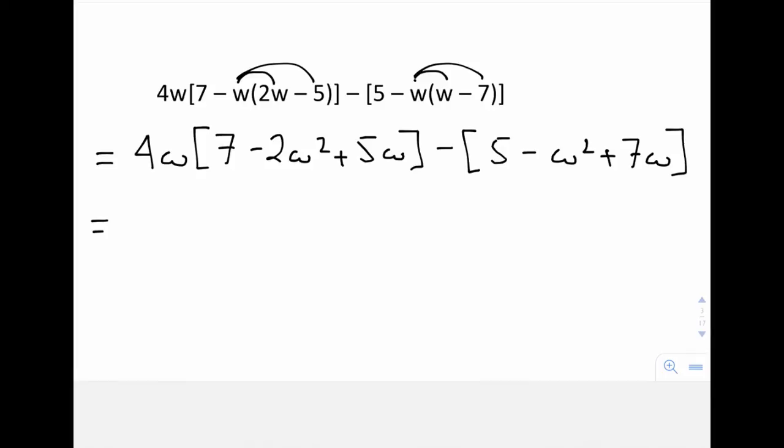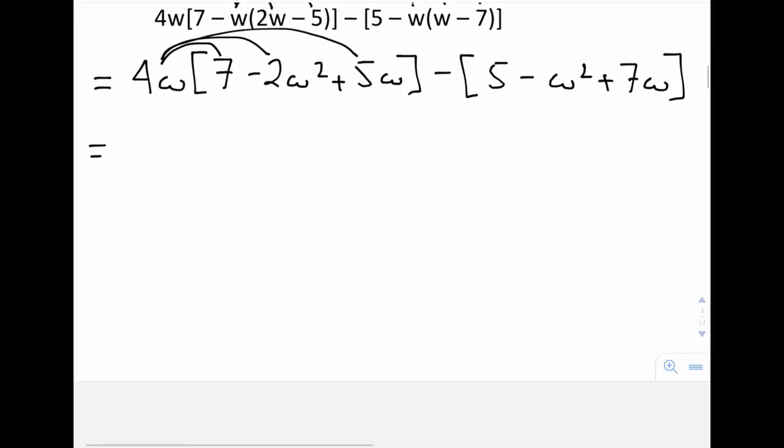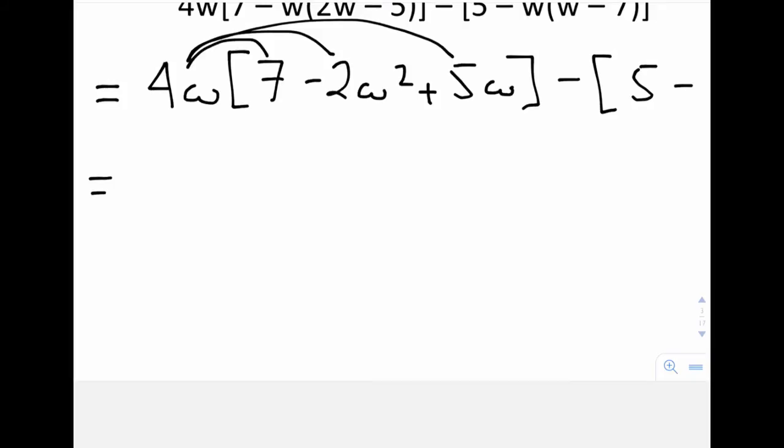Now within each of those sets of brackets I can't resolve anything, there are no like terms. So I'm going to multiply in the monomial terms in front. So this 4w gets multiplied into here, into here, and into here. So my next line is going to look something like this.